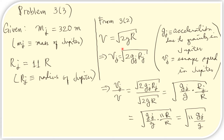The escape speed formula is easily extended to Jupiter: V sub J is the escape speed from Jupiter, which depends on G sub J, the acceleration due to gravity on Jupiter. We then look for the ratio V sub J over V sub Earth. Carrying out the division and substituting R sub J equals 11 times R sub Earth, we obtain an expression that requires the ratio of G sub J to G sub Earth.